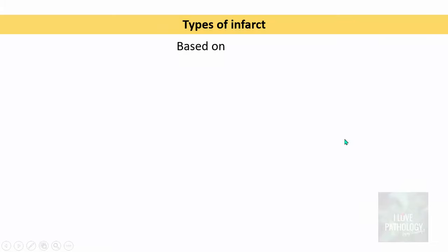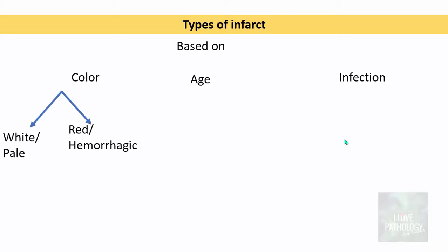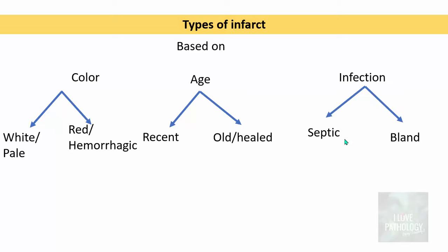Infarcts can be classified based on color, age, and whether they are infected. Based on color, they are classified as white or pale infarcts and red or hemorrhagic infarcts. Based on age, they are either recent infarcts or old healed infarcts. If infected, the infarct is called a septic infarct; if not, it is referred to as a bland infarct.